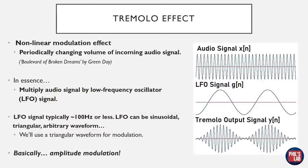The tremolo effect is one of the most basic non-linear modulation effects. Effectively it's periodically changing the volume of an incoming audio signal — you can hear that effect quite well on Boulevard of Broken Dreams by Green Day on the intro guitar. We have a fairly high-frequency audio signal X(n), and we modulate that with an LFO, or low-frequency oscillator signal G(n). We're simply multiplying the audio signal by the LFO signal to get the output. So our original audio signal has its amplitude changed by this low-frequency oscillator signal. This is non-linear because we are performing a non-constant multiplication.